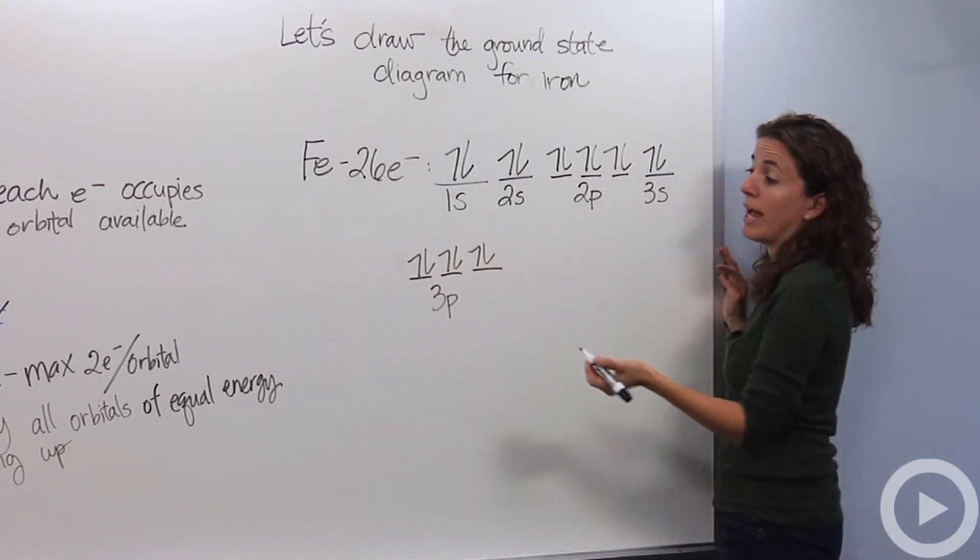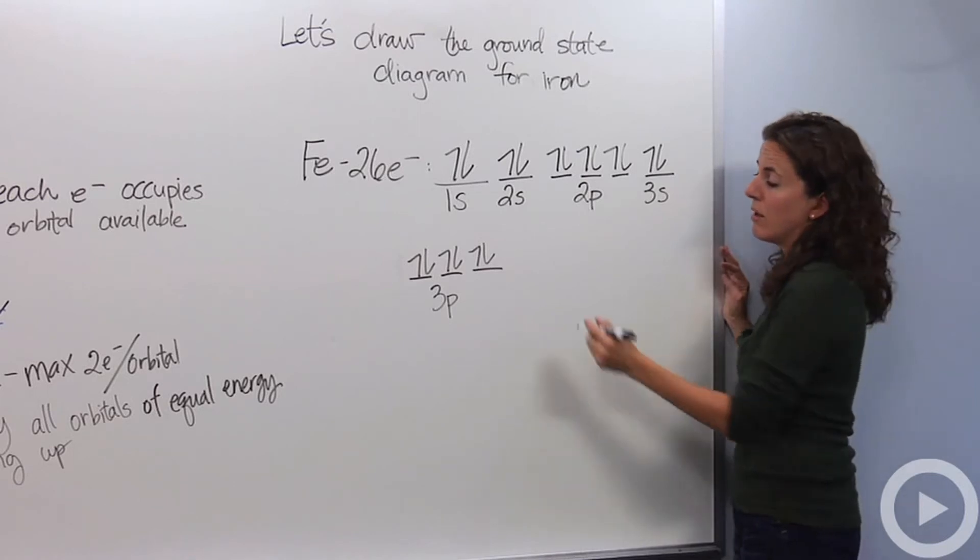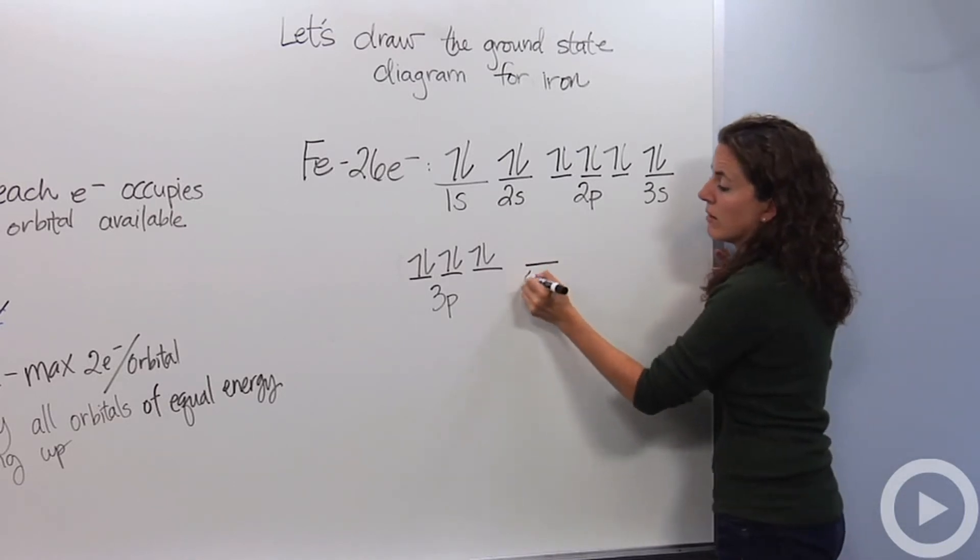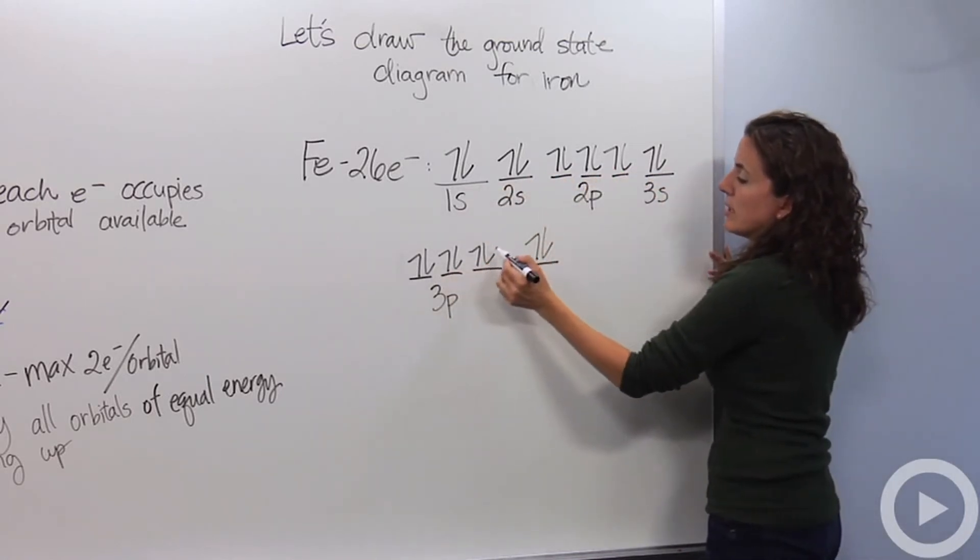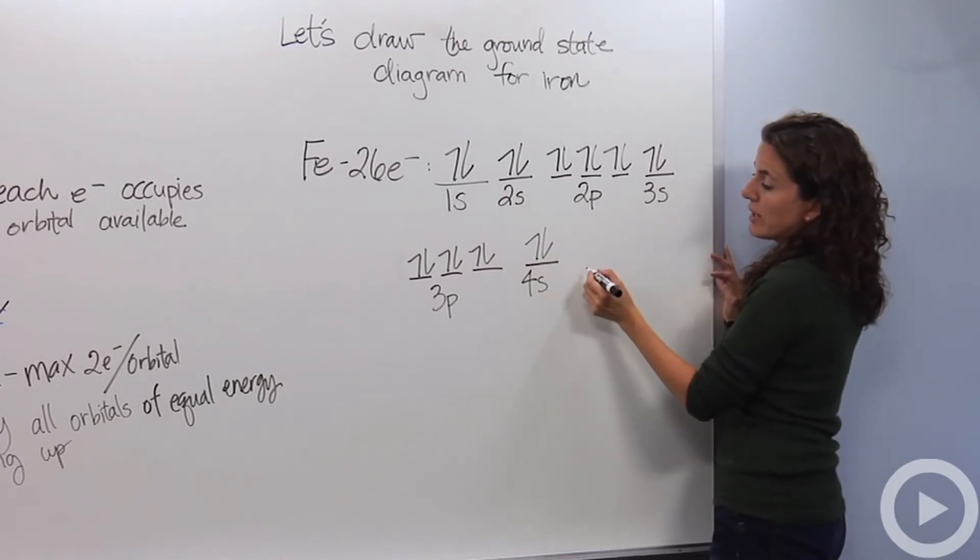After the 3p we're going to go into the 4s. No, we're not going to go into the 3d, we go right into the 4s. So we have two electrons there. So we have 2, 4, 6, 8, 10, 12, 14, 16, 18, 20. We have 6 electrons left.